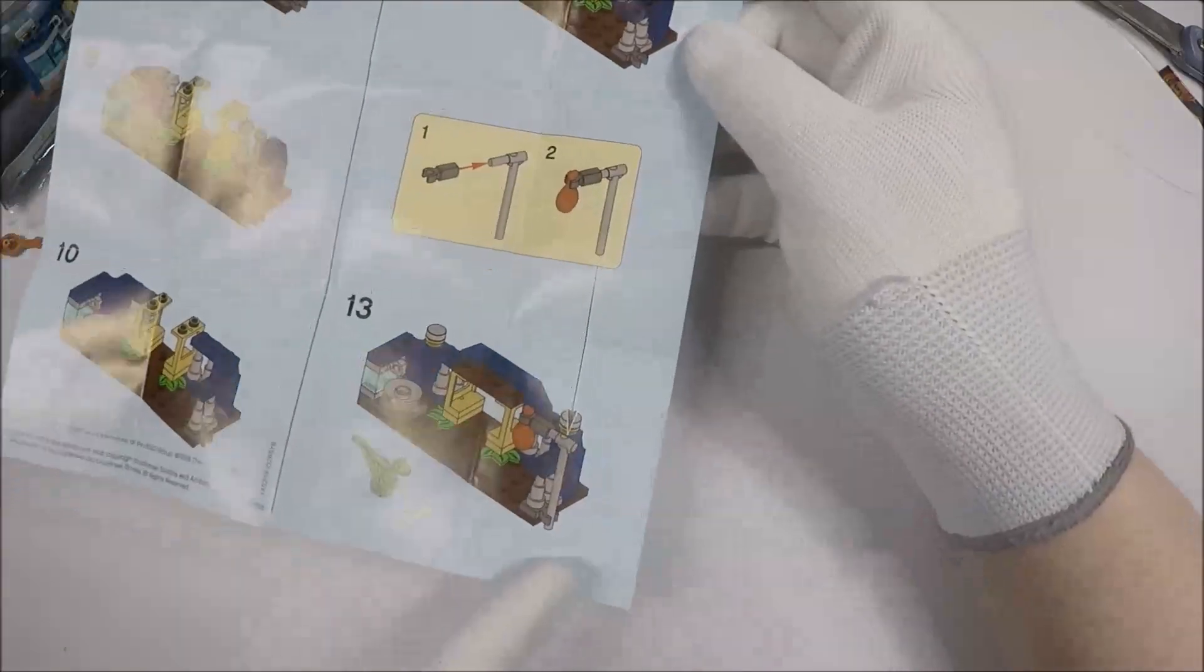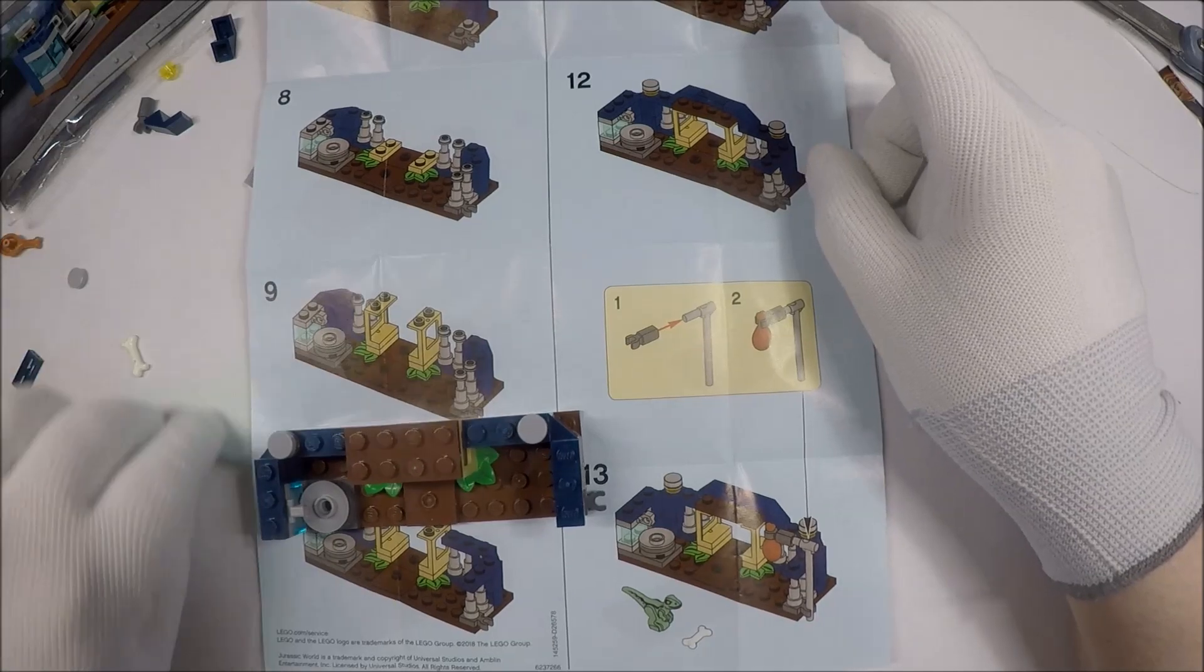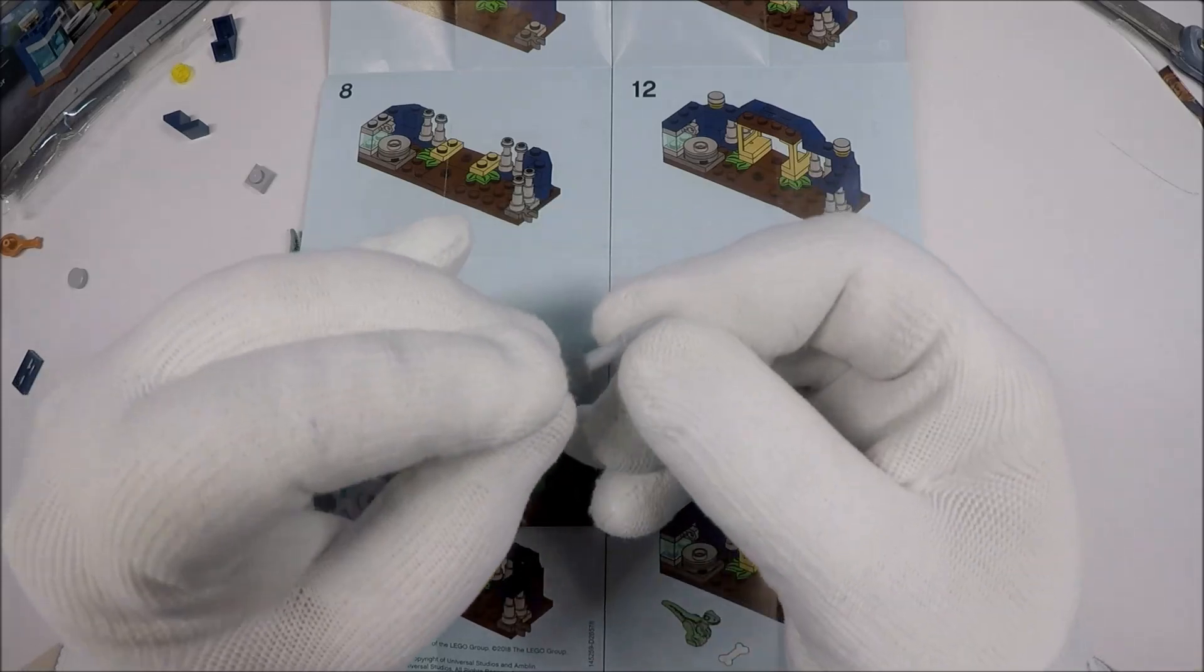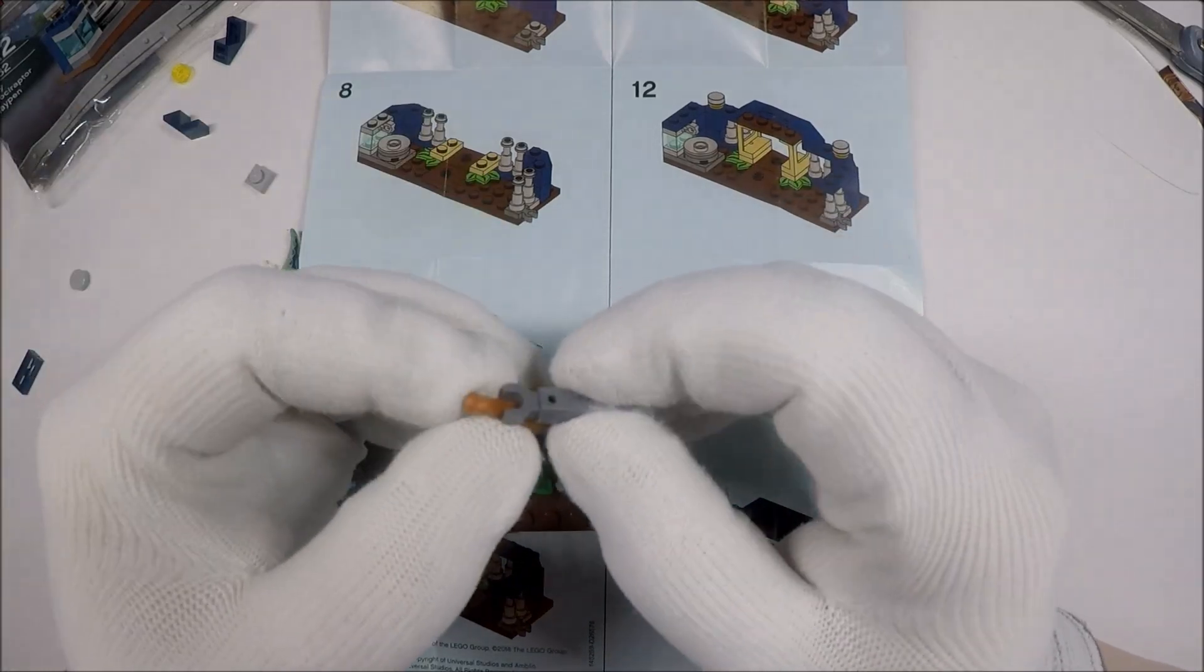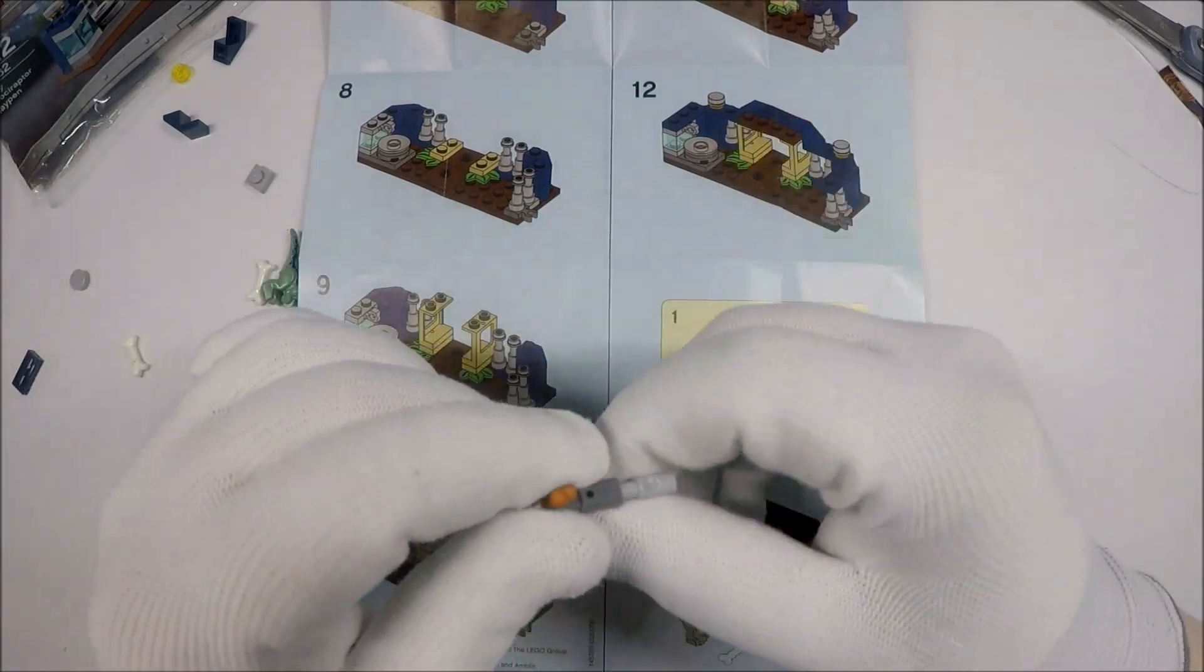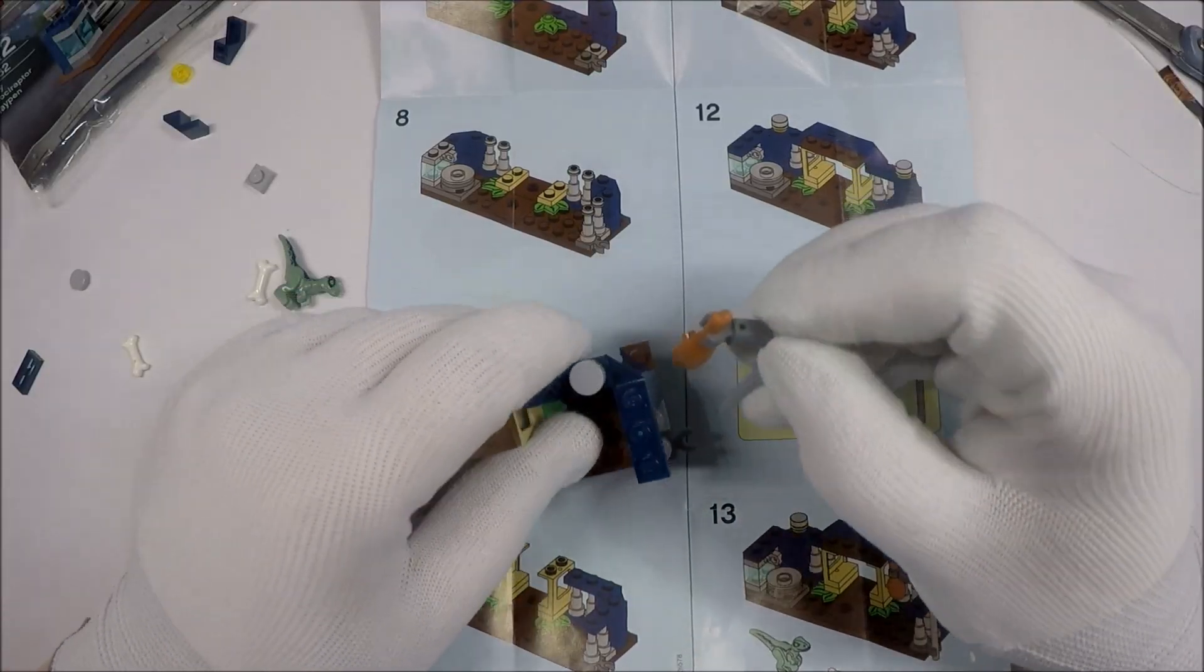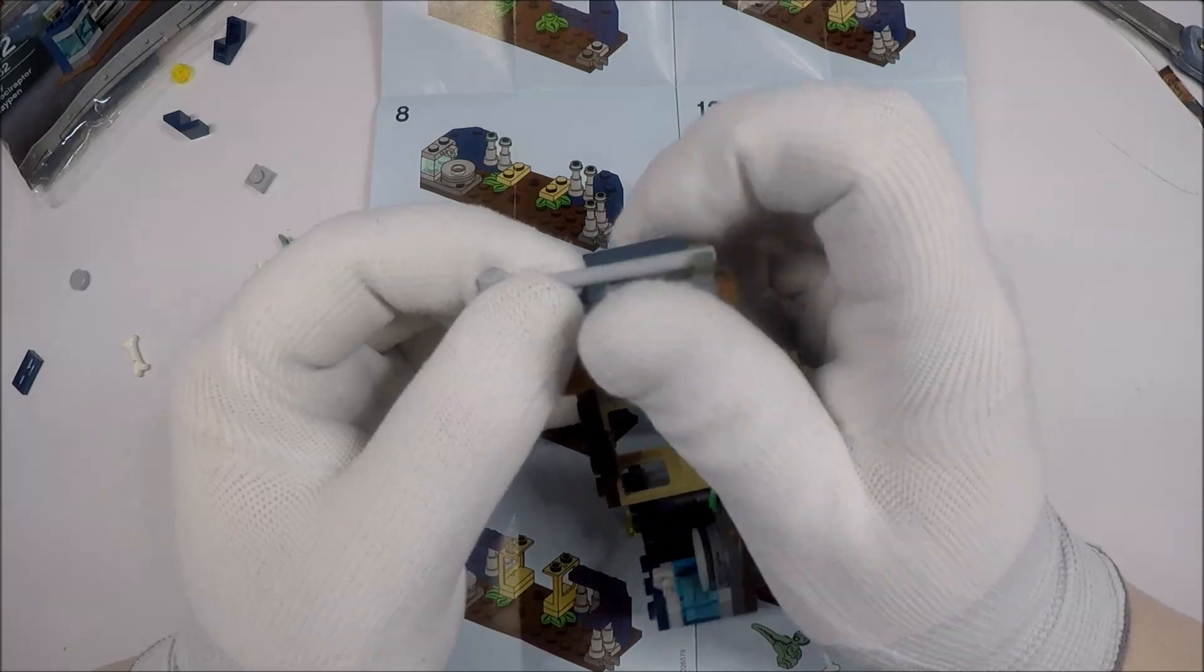And then next what we do is we make the little dangly thing. That's probably not the technical term for what you want to use. So this goes here. Like so. We can clip on our chicken drumstick. It's kind of weird looking. It doesn't have a back to it. Does it? No, it doesn't. So this goes in here. Like so. It clips in. Like so.